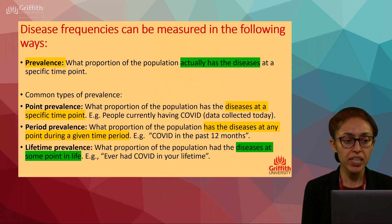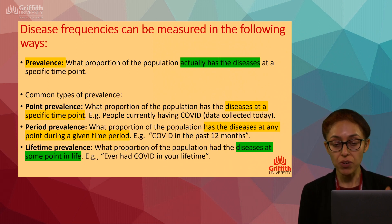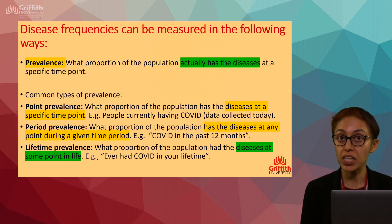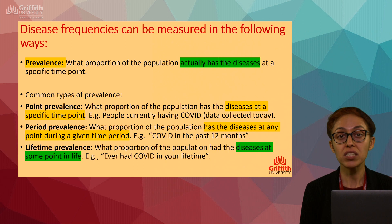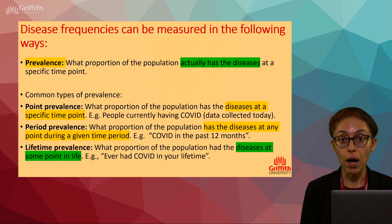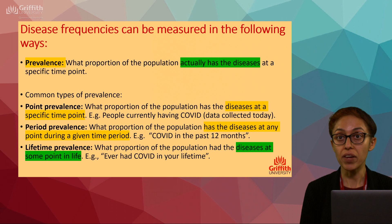The most common type we see in nutrition research is point prevalence — what proportion of the population has the disease at a specific time point. For instance, how many people currently have COVID today when you're doing a survey at Griffith University.